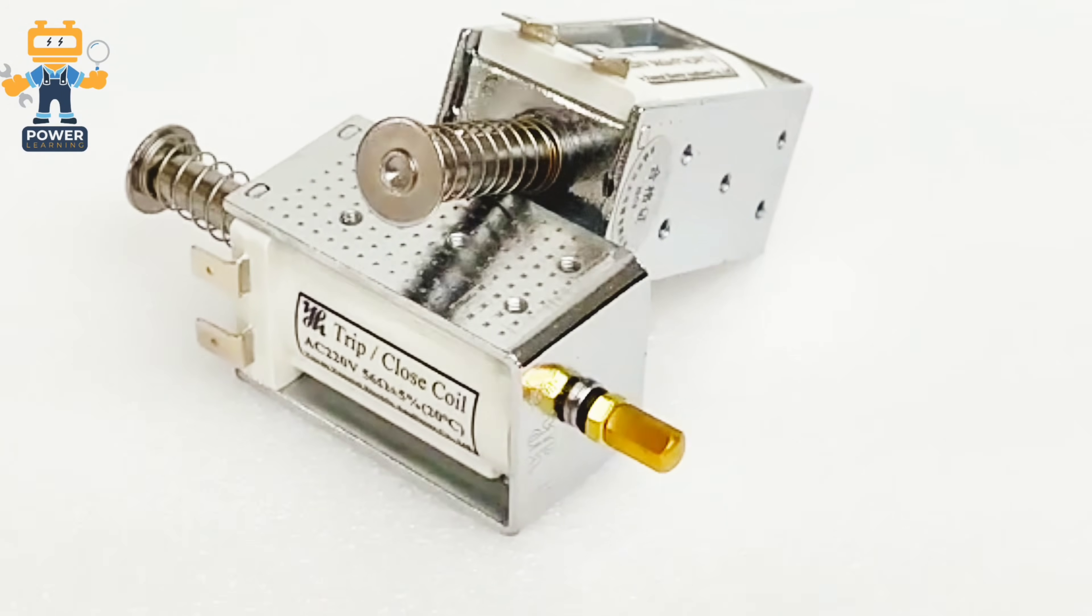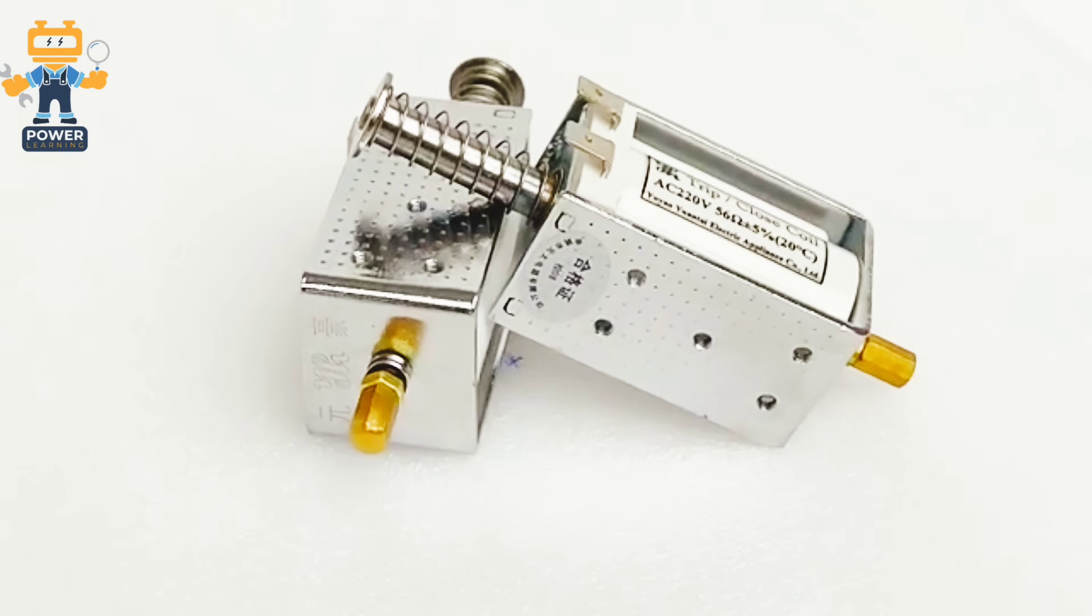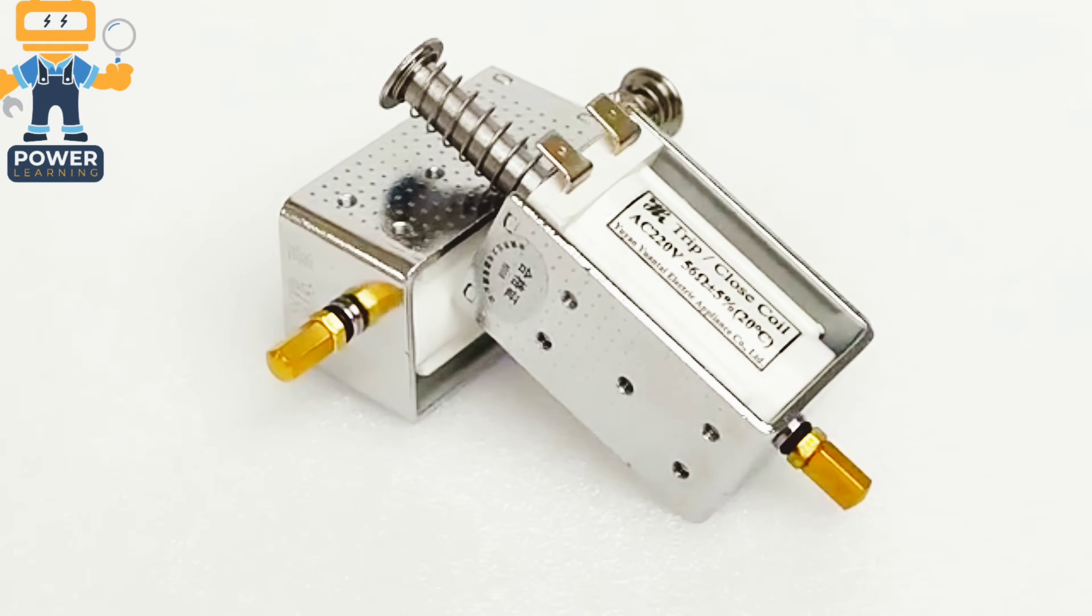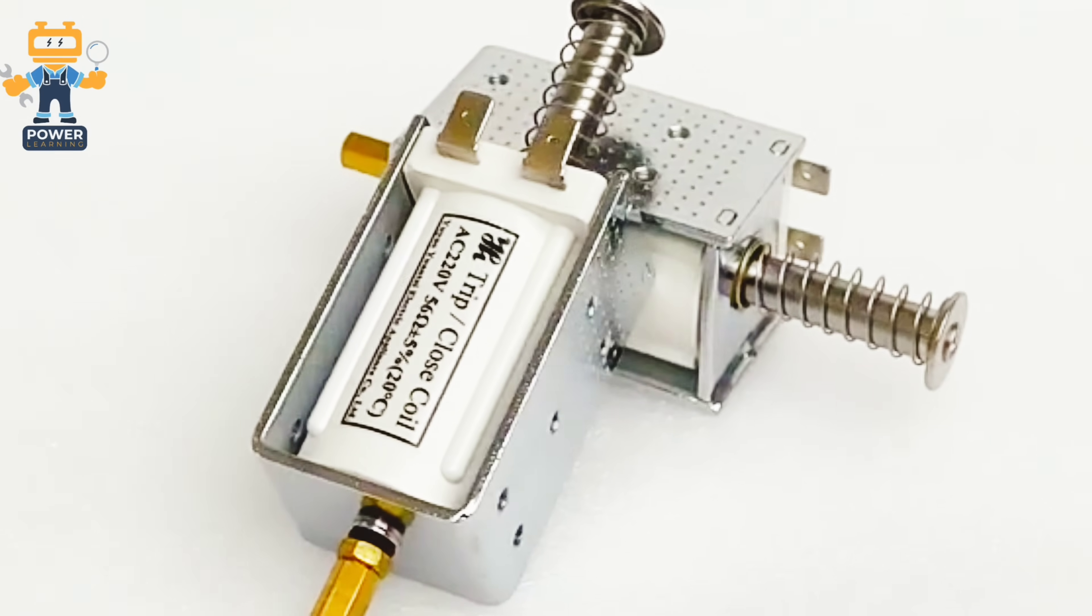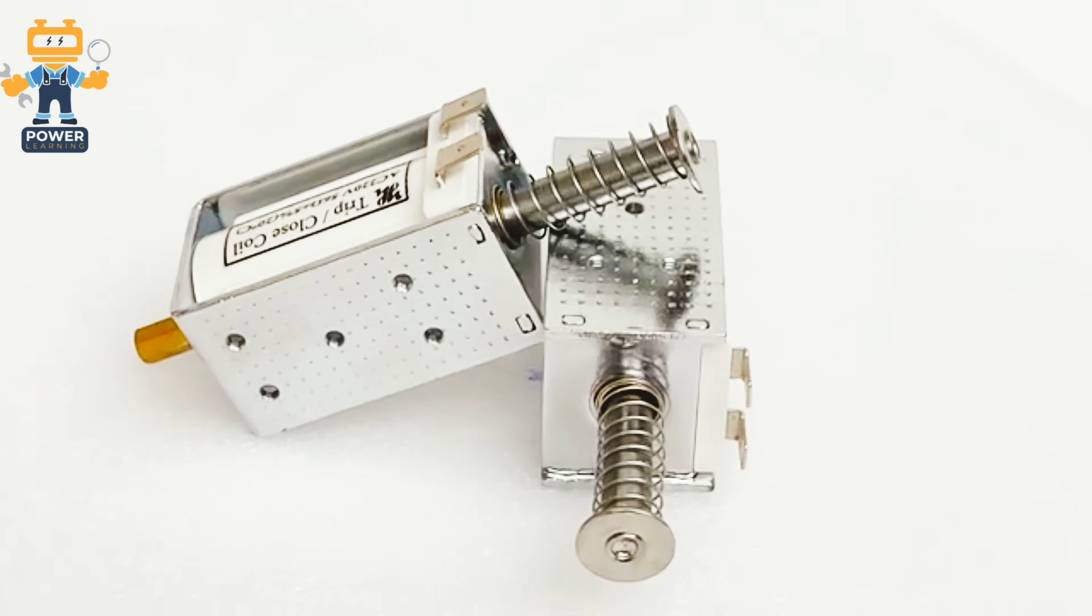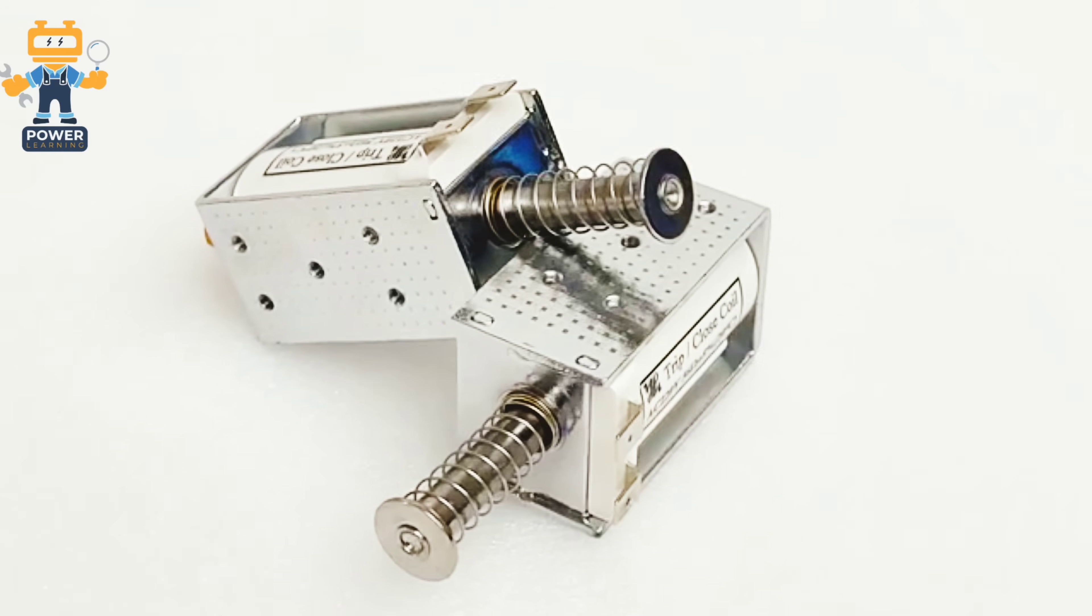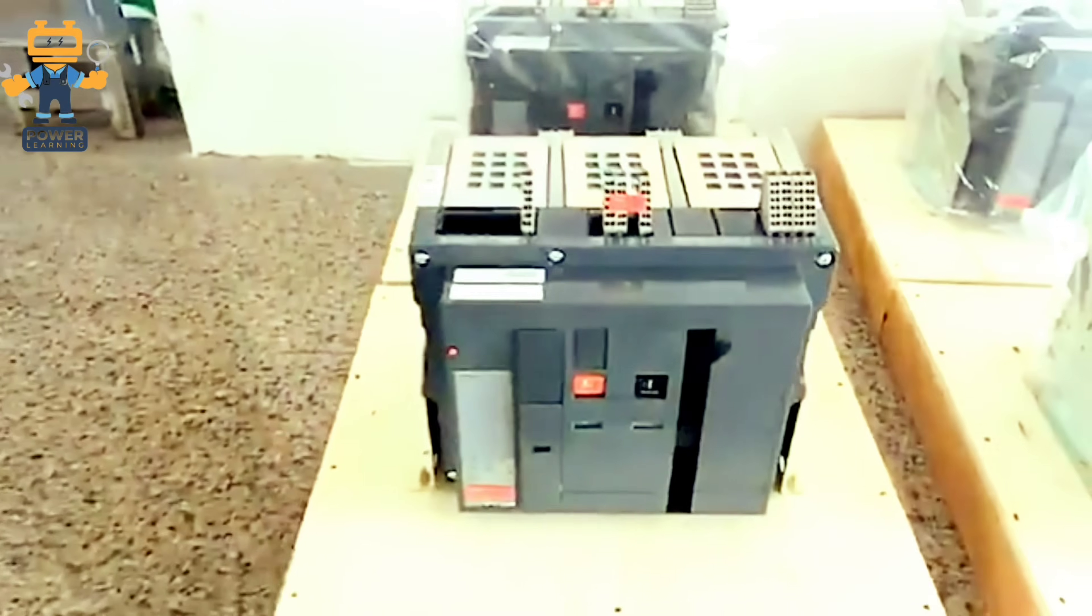So now in front of you, these are trip coils. These coils are very important for the breaker. Without this coil you cannot operate the breaker automatically. These coils we are using to turn on and turn off the breaker. These coils are called shunt opening and shunt closing coils. Normally in these coils we have different ratings like 220 volt, 12 volt, 24 volt AC DC.